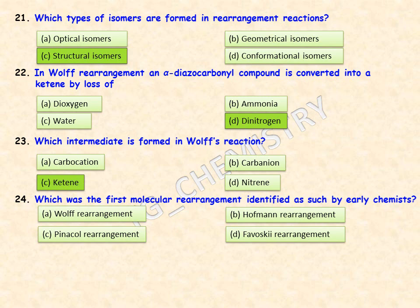Which was the first molecular rearrangement identified as such by early chemists? Options are Wolff, Hoffman, pinacol, and Favorskii rearrangement. Option C — pinacol rearrangement — is the right answer, as it was studied much earlier among these four.